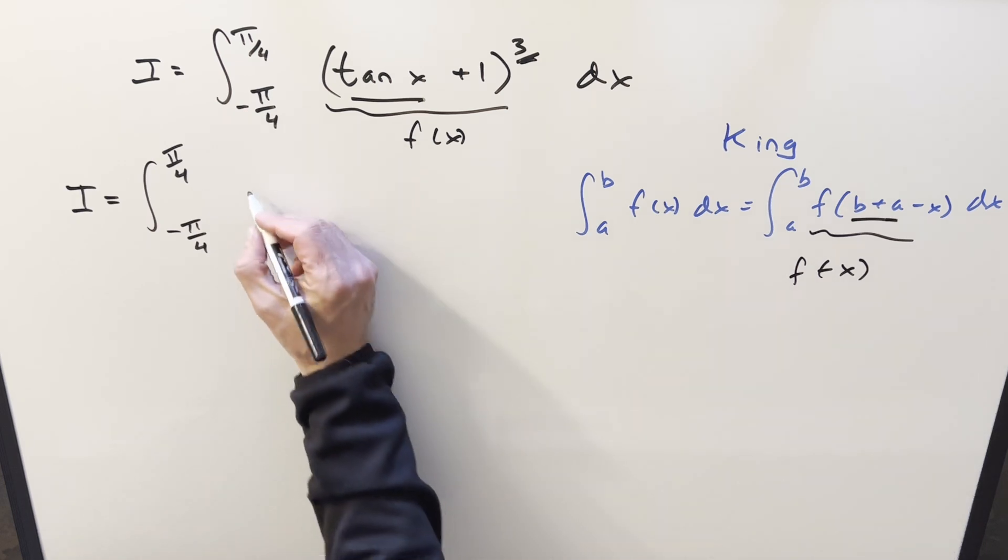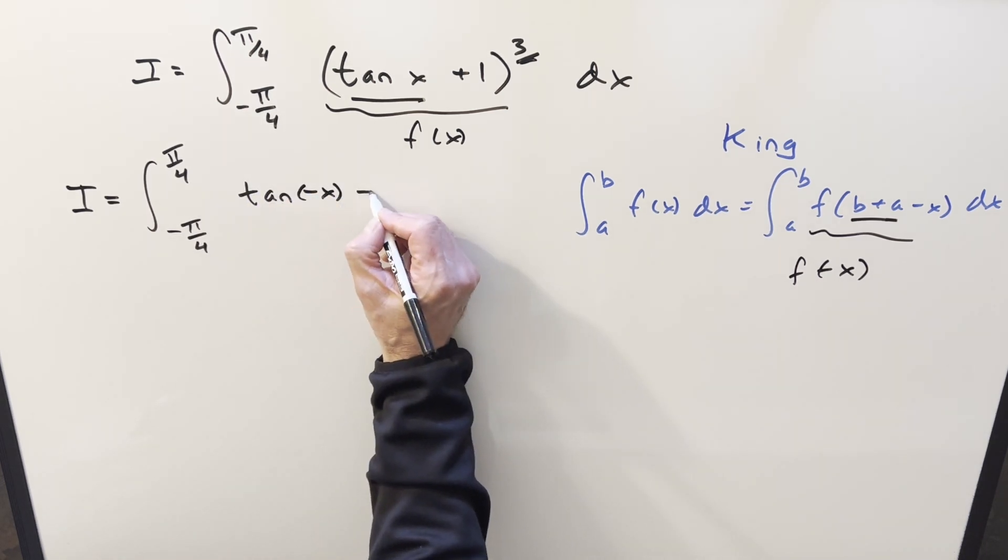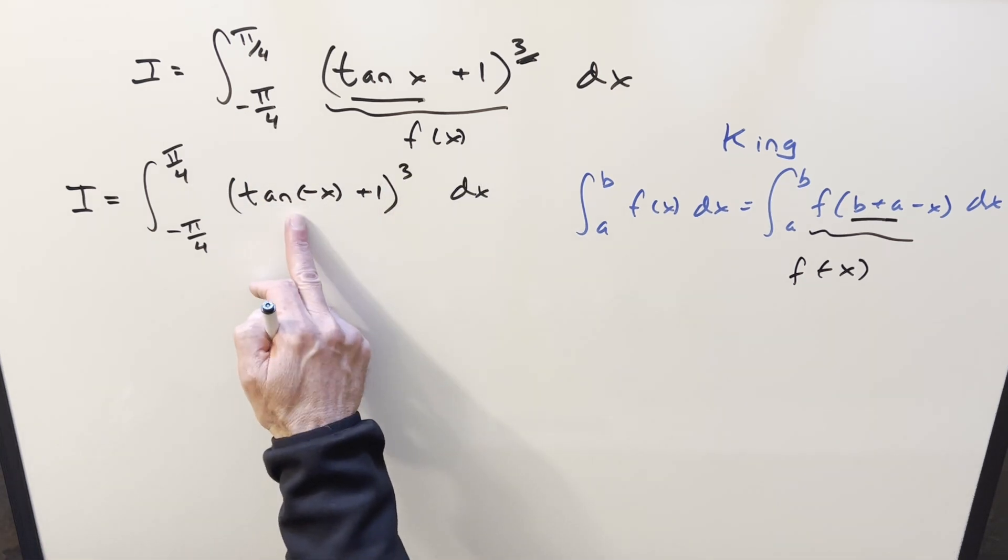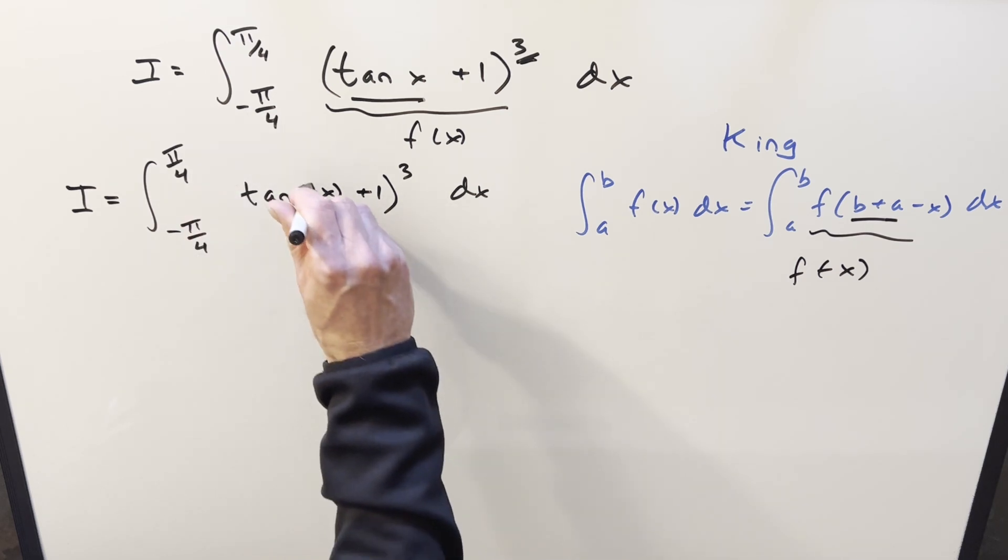Then we input minus x. All we're doing is we're going to change tangent to tangent minus x plus 1 all cubed. But now here we can still use the fact that tangent is an odd function and take this minus sign up front. So let me make a little space for it.